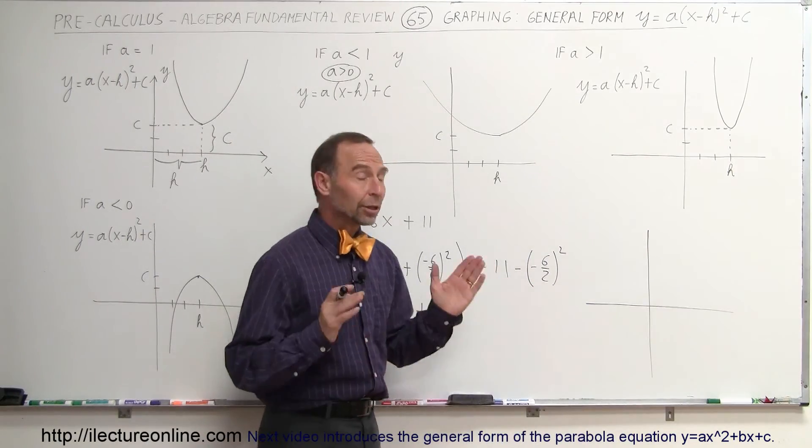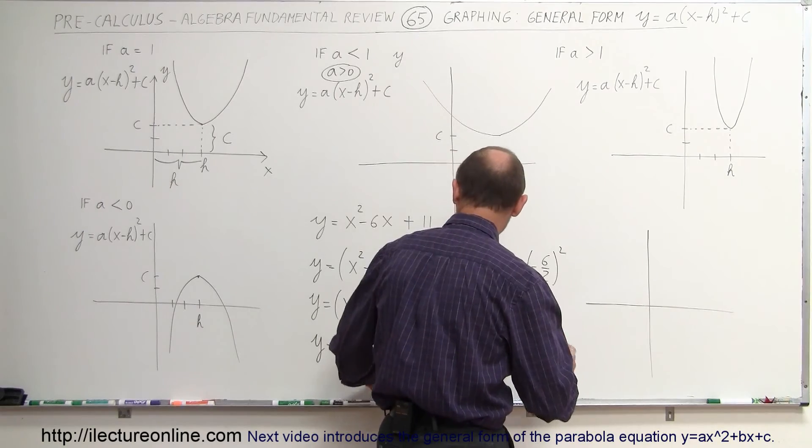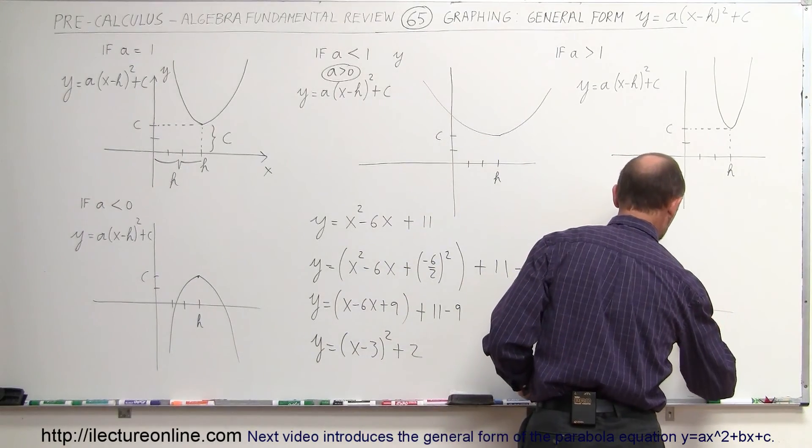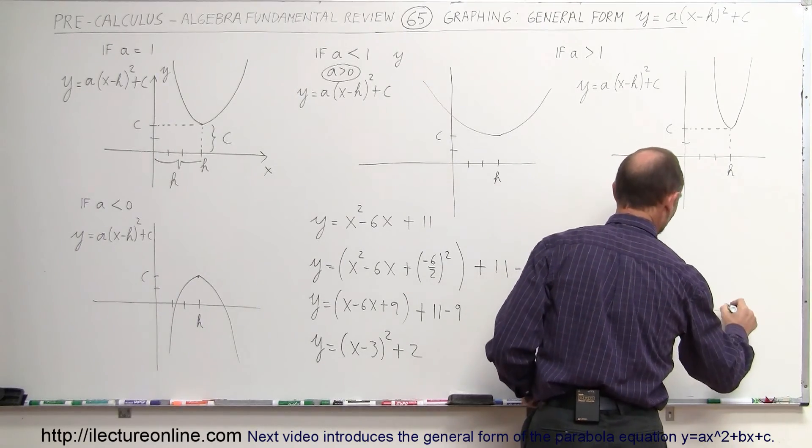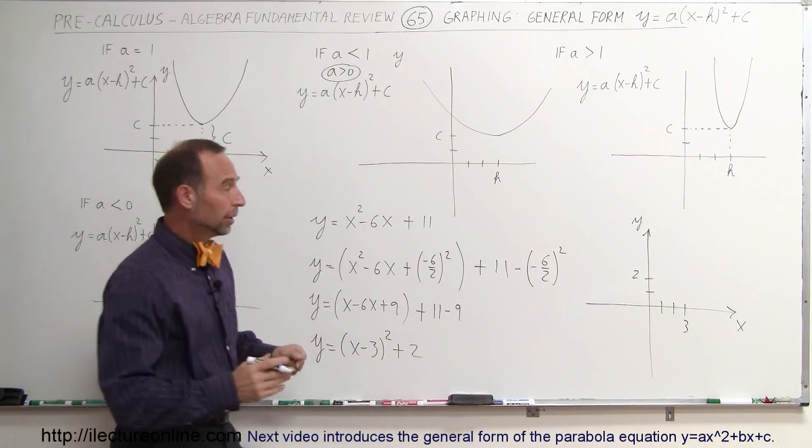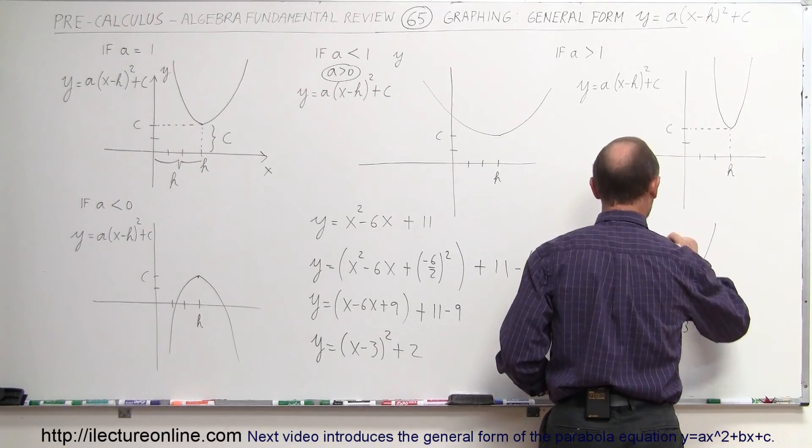The equation will look like this when we graph it. We have a shift to the right 3, and a shift up by 2. So we go 1, 2, 3, and 1, 2. This is our y-axis, this is our x-axis. Notice the parabola opens upward, and starting from here, it will look like that.